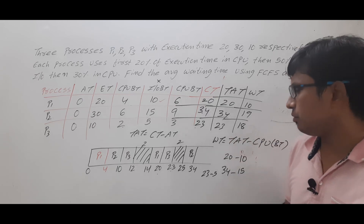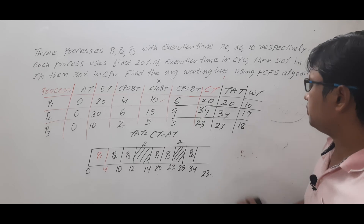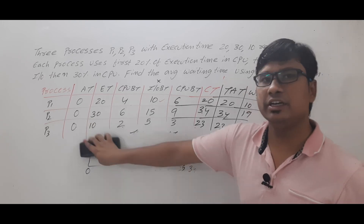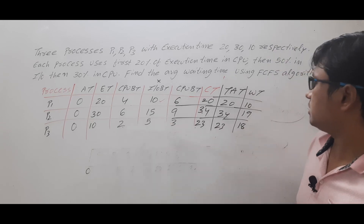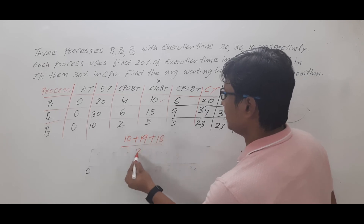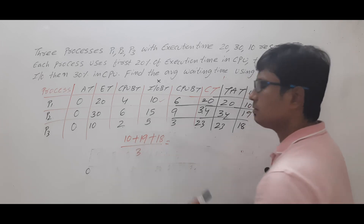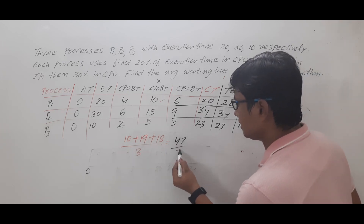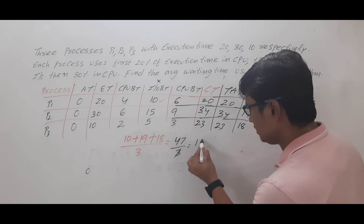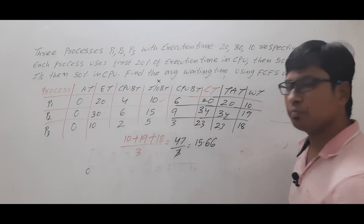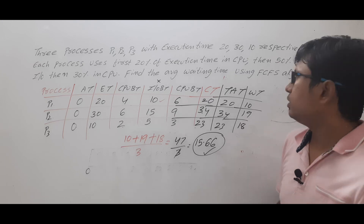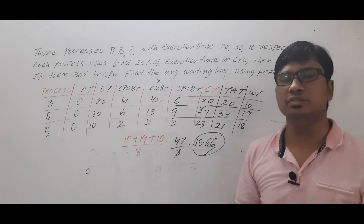We got the waiting times: P1 = 10, P2 = 19, P3 = 18. They asked us to compute the average waiting time. Average waiting time equals sum of waiting times divided by number of processes, which is (10 + 19 + 18) / 3 = 47 / 3, which is approximately 15.66 units. That is the average waiting time using the first come first serve scheduling algorithm.